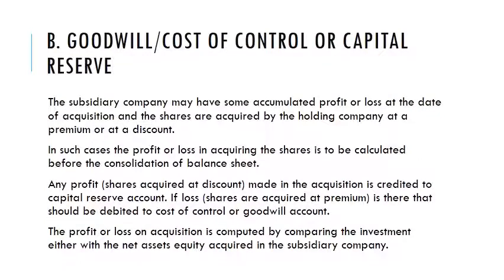The second procedure is goodwill, or cost of control, or capital reserve. The subsidiary company's accumulated profit at acquisition time is considered. If there is a premium, it is credited to the capital reserve account; if there is a discount, the loss is debited to the cost of control or goodwill account.